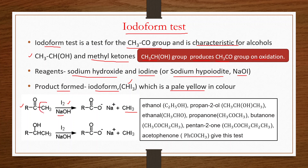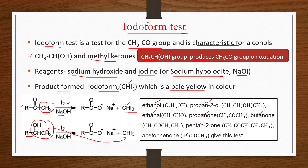In the iodoform test, the CH₃ part converts into iodoform (CHI₃). Compounds that give the iodoform test include: ethanol, propan-2-ol, ethanal, propanone, butanone, pentan-2-one, and acetophenone (C₆H₅COCH₃).